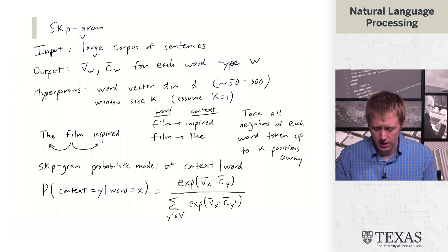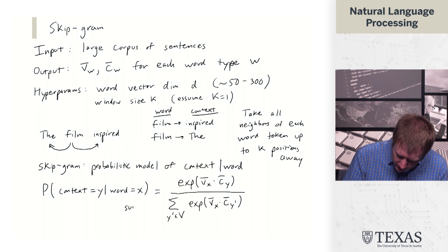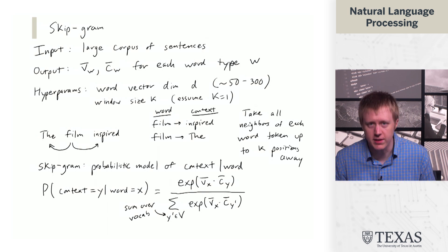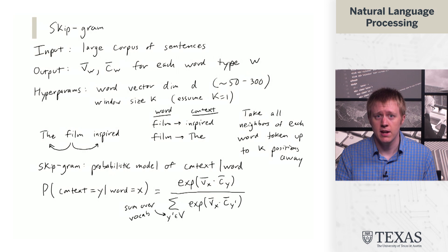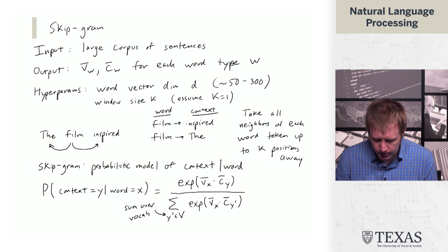If we use Y to denote the context word and X to denote the word, then we have something that should look somewhat familiar. So this looks like multiclass logistic regression. In that we have an exponential of some kind of score divided by a sum of exponentials.